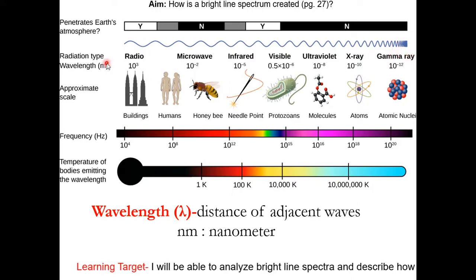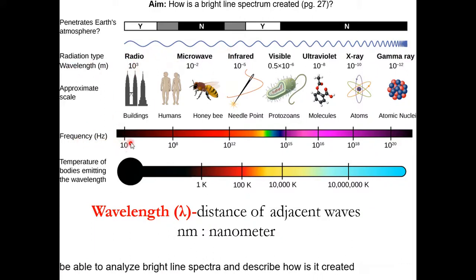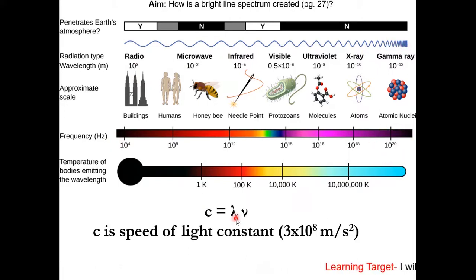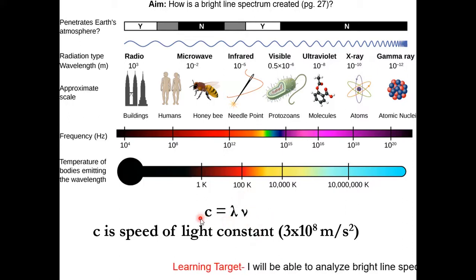You may notice there is an inverse relationship between wavelength and frequency: the longer the wavelength, the shorter the frequency; the shorter the wavelength, the longer the frequency. Wavelength and frequency are related to each other through the equation λν = c, where multiplying both gives you the speed of light.